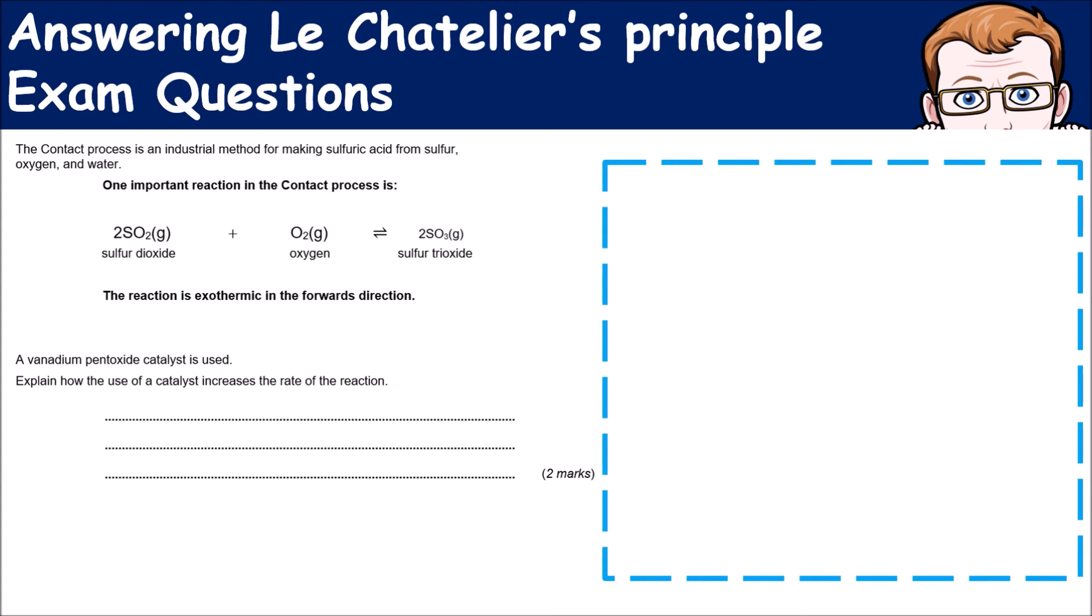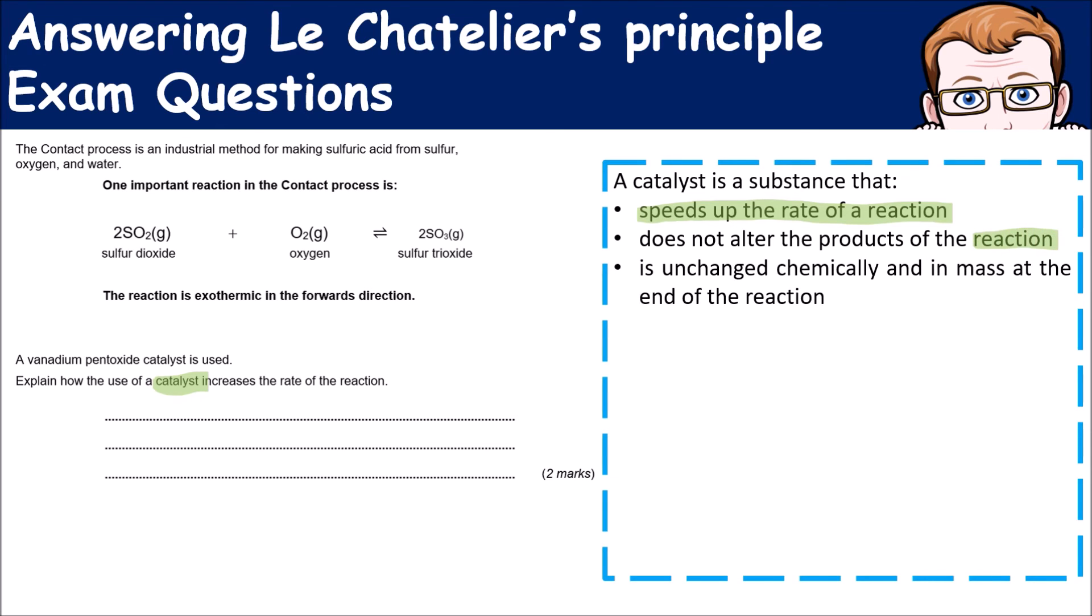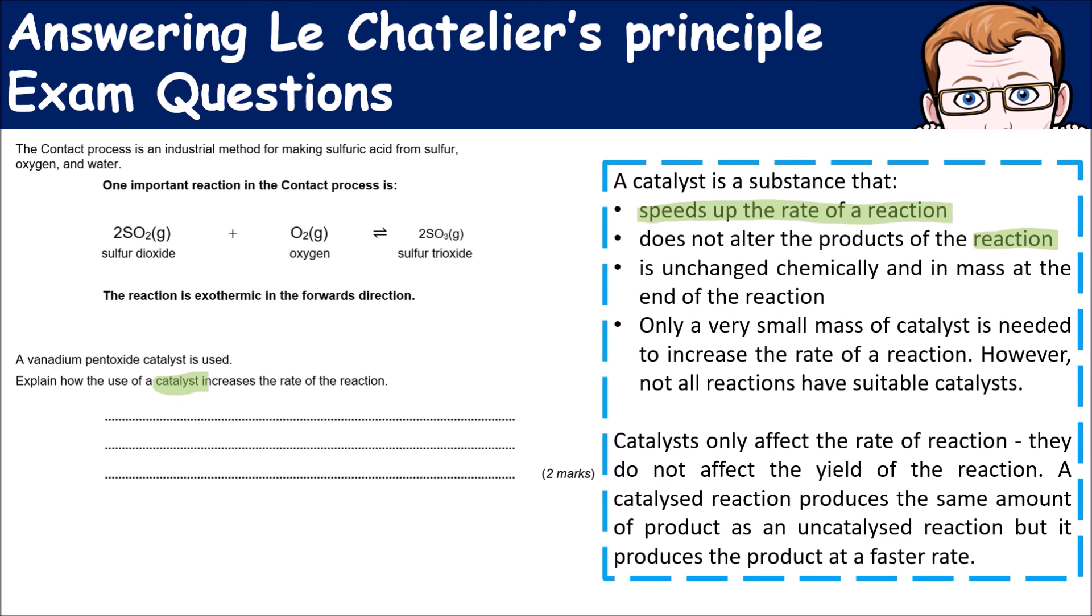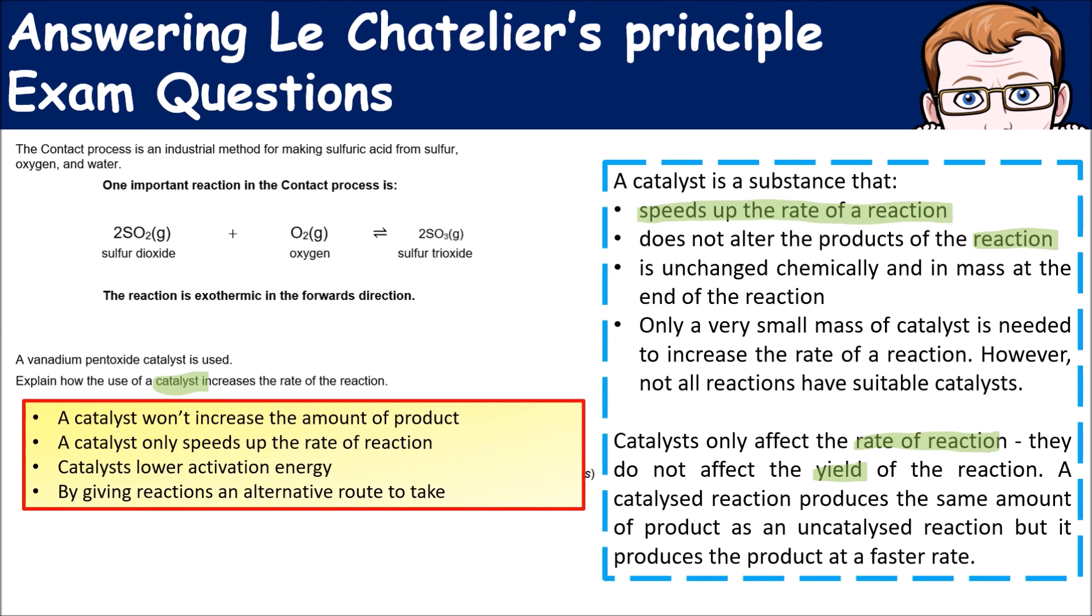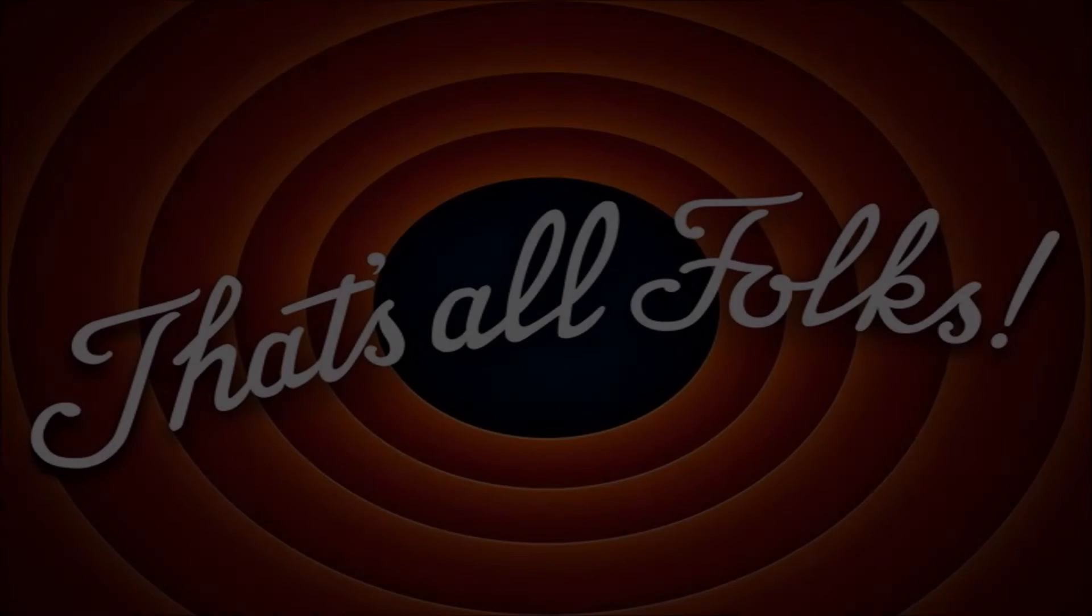Finally, the last part of this question talks about what effect a catalyst would have on the rate of reaction. Remember that a catalyst is a substance that speeds up the rate of a reaction. It does not alter the amount of products in the reaction. It's unchanged chemically, so the mass of the catalyst is the same at the beginning and at the end. Only a very small amount of catalyst is needed. Remember, catalysts only affect the rate of reaction, they're not actually affecting the yield. We're not physically making more product. Key things you need to talk about is that a catalyst won't increase the amount of product. A catalyst is only speeding up the rate of reaction. It's doing this by lowering the activation energy by giving the reaction alternative routes to take and react.